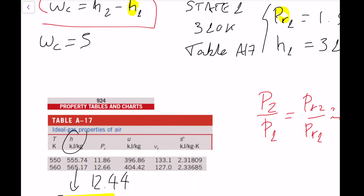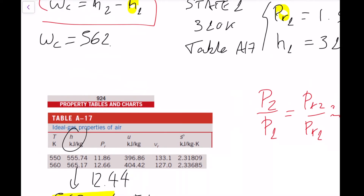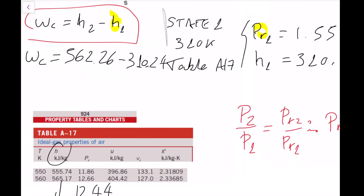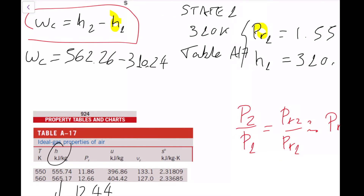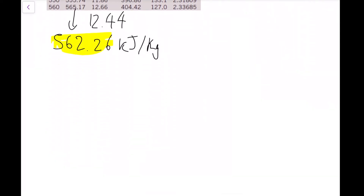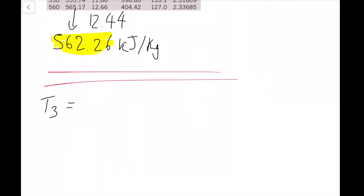So the isentropic compressor work would be 562.26 minus 310.24. But we cannot forget that the compressor has an efficiency of 80%. So the real compressor work is going to be this difference divided by 0.8. We can apply that later on. Now let's go ahead and calculate our turbine work. Just like before, we're going to do exactly the same thing, but this time starting from 900 Kelvin — state 3.